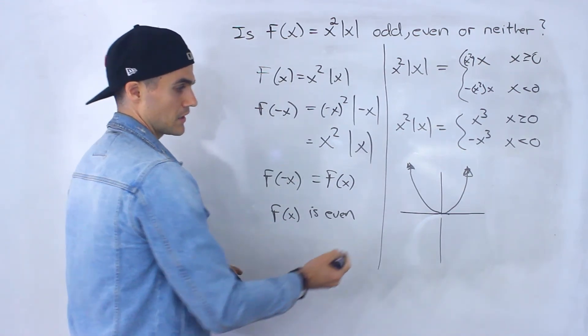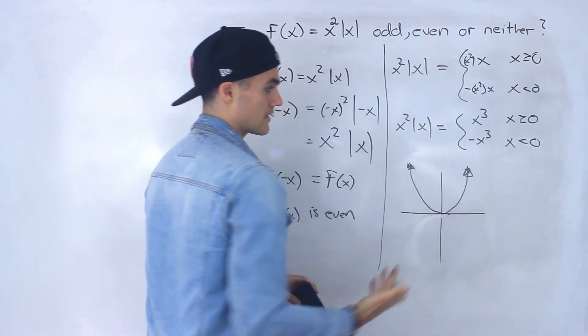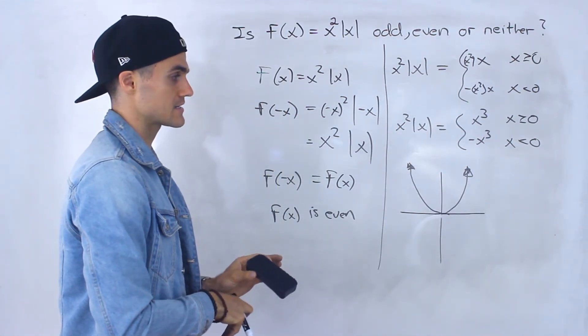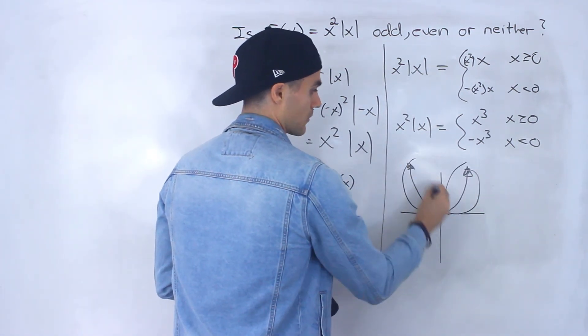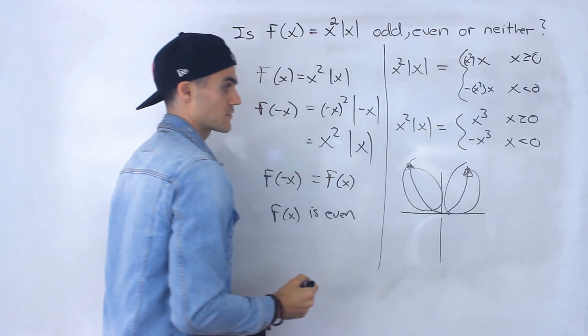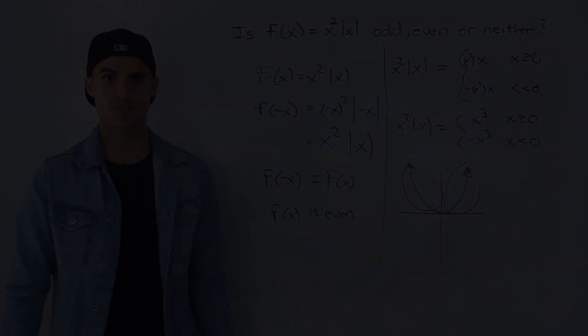So from here, this is the graph for this. Notice that it's symmetrical about the y-axis. It has axis symmetry. If I take this and reflect it in the y-axis, I would end up with that or vice versa. So we can visually see that this function is even as well.